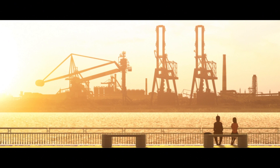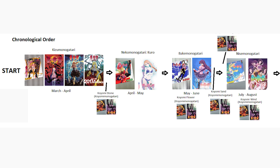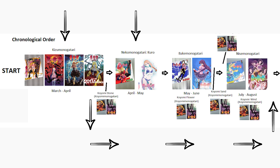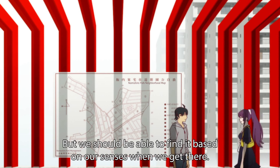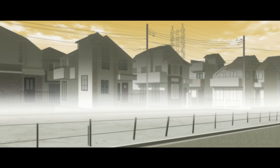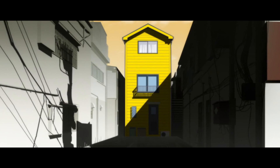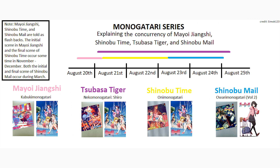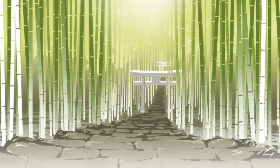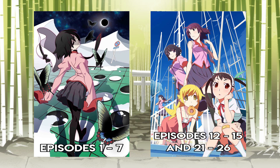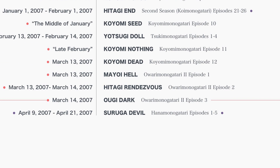Now I'll explain the major changes compared to release order. Kizumonogatari and Nekomonogatari Kuro technically happen at the beginning of the timeline, but since they work better as flashbacks, you watch them after Nisemonogatari — though you do need this info before 2nd Season. The major changes to the 2nd Season viewing order happen because one arc occurs at the exact same time as three other concurrent arcs, as shown in the graph. Because of this, you watch the bottom line first, then the top line. Finally, Hanamonogatari happens at the very end of the story chronologically, which is why it's watched last.